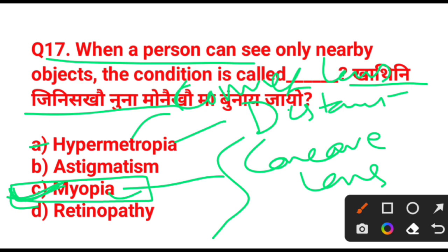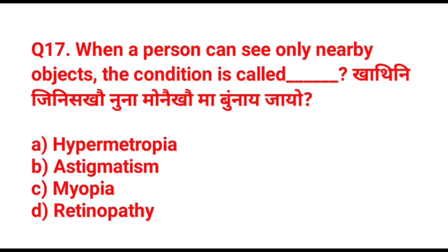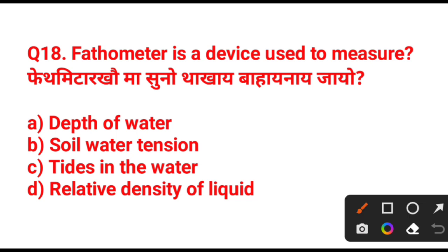For myopia, a concave lens is used to correct the vision — a concave lens is used. For hyperopia (far-sightedness), a convex lens is used. Next question: a fathometer is a device used to measure — depth of water.